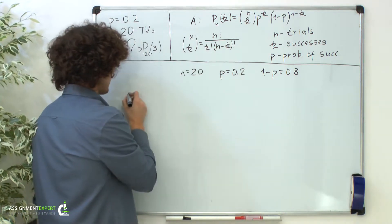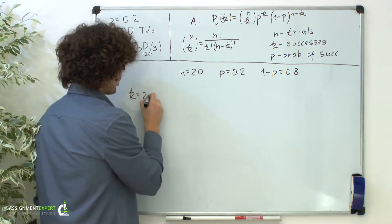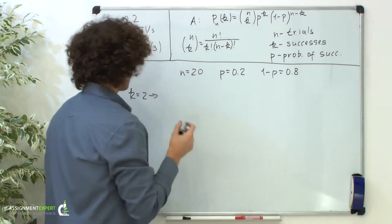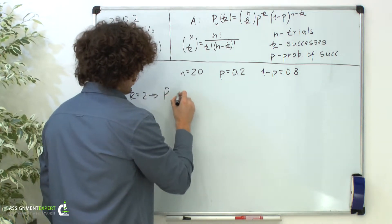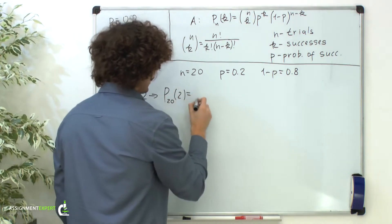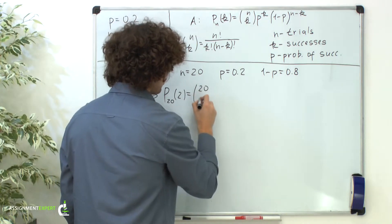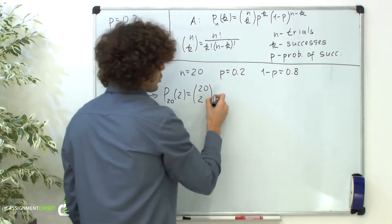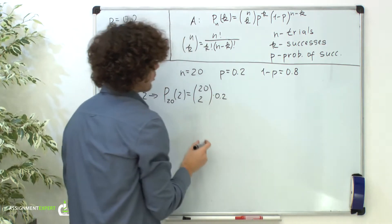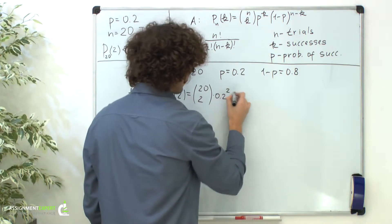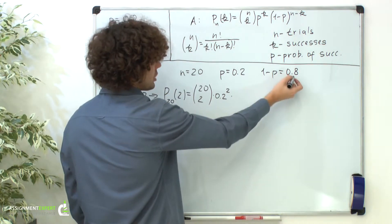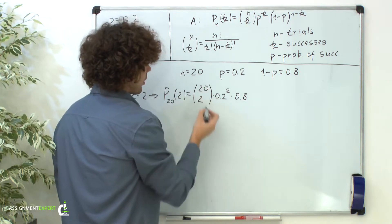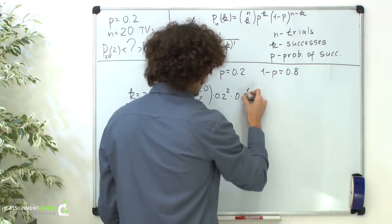Let's consider the case when k equals 2, which means there are two TVs with a defect. The probability of 2 out of 20 equals 20 choose 2 times p, which is 0.2, raised to the second power times 0.8, which is the probability of failure, raised to the power of 20 minus 2, which gives us 18.